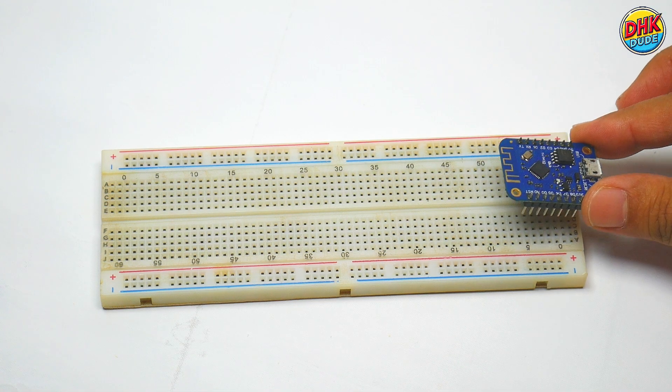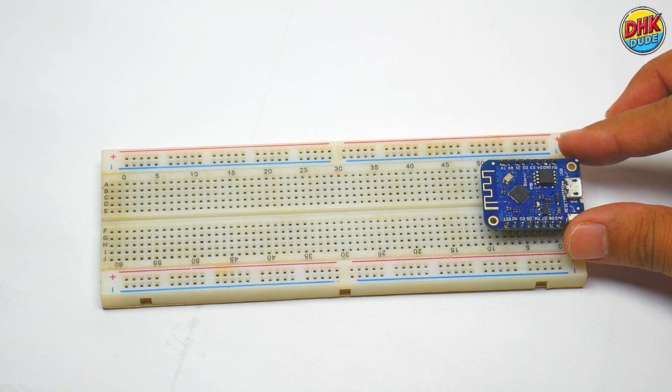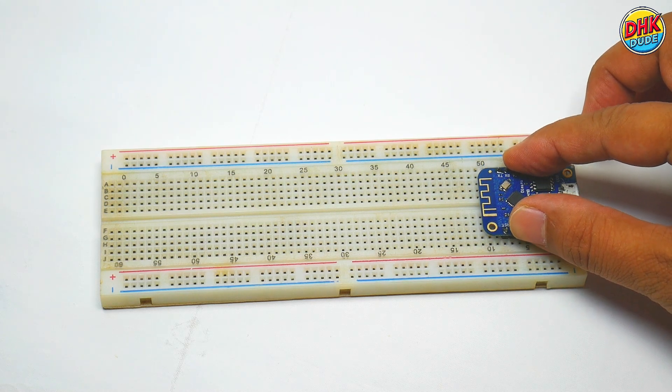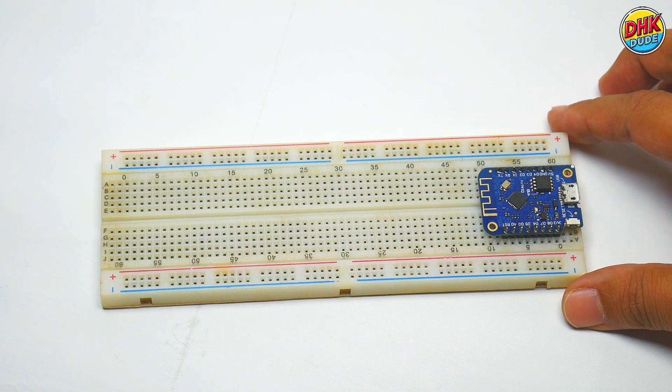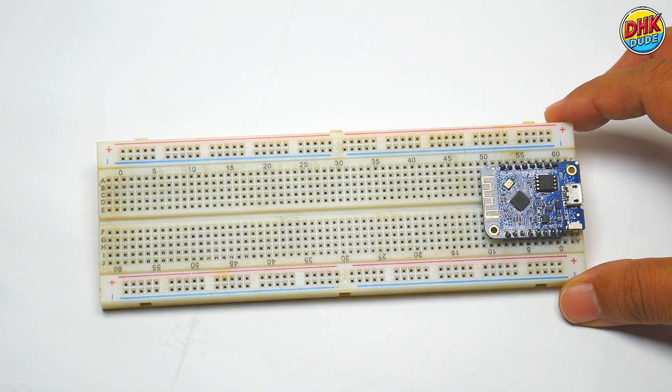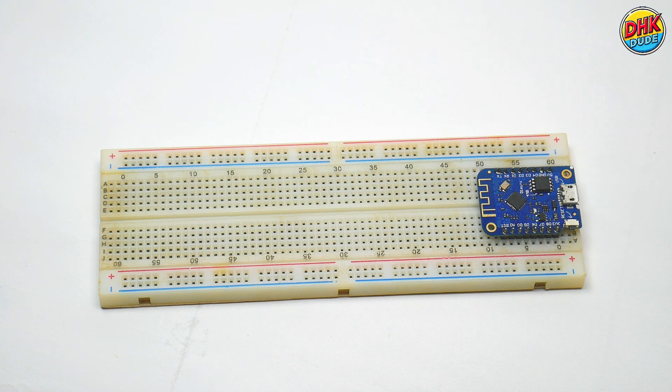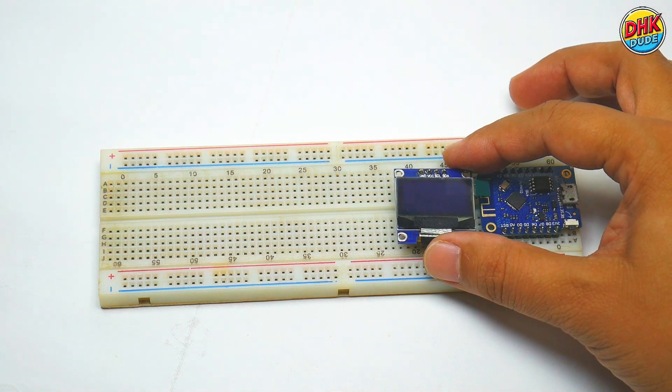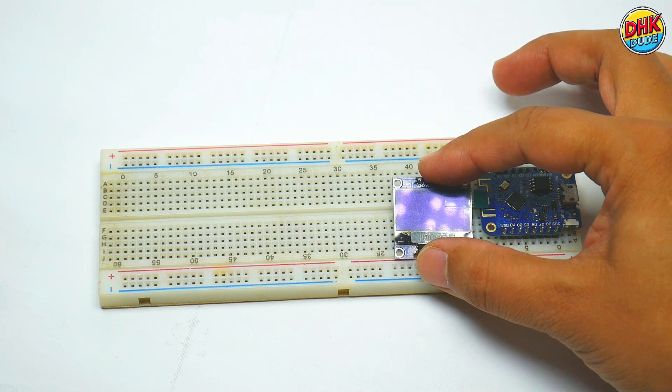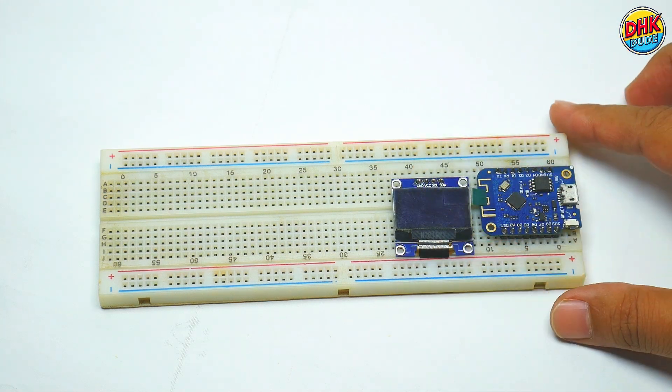First, take our VEMO's D1 Mini microcontroller and install it on the breadboard. Now take OLED screen and install on the breadboard. Keep enough empty points on the top side.